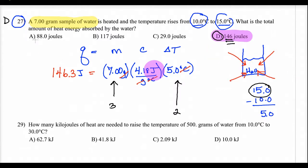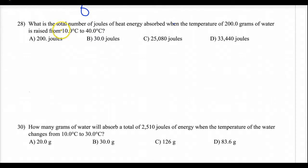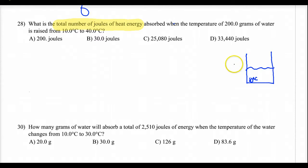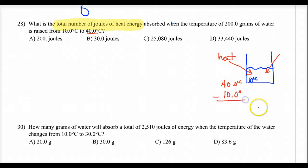Moving to number 28: what's the total number of joules of heat absorbed when the temperature of 200 grams of water is raised from 10 degrees to 40 degrees? Same kind of issue here. We have some water in a container that's initially at 10 degrees. Heat must be flowing in because the temperature becomes 40, so our temperature change is 40.0 minus 10.0, which gives me 30.0 degrees Celsius.